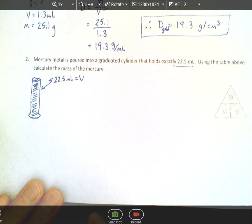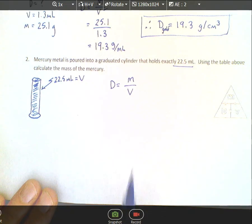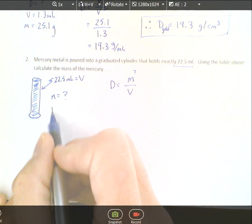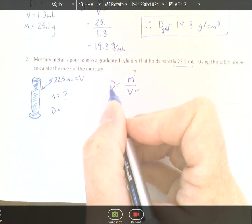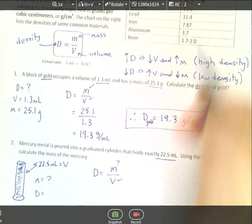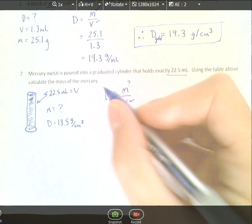Using the table above, calculate the mass of the mercury. We need to use the table. If you write density equals mass over volume, you'd say I'm looking for the mass, so I don't know the mass. If I don't have the mass and I'm trying to find it, and I have the volume, I don't know the density. In that case, you're not given enough information, so you need to look at the table. Find mercury. It's 13.5 grams per cubic centimeter. So we do know the density, and we don't know the mass.